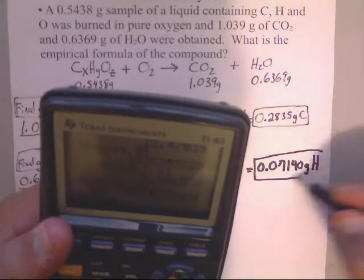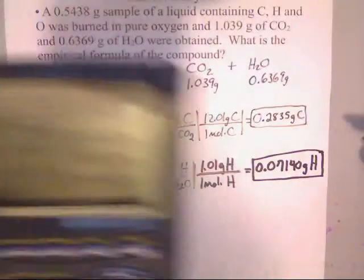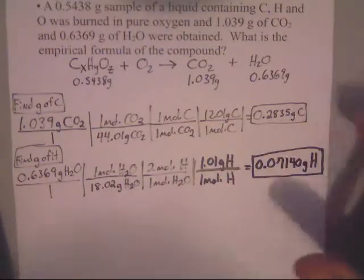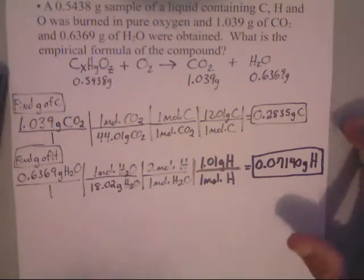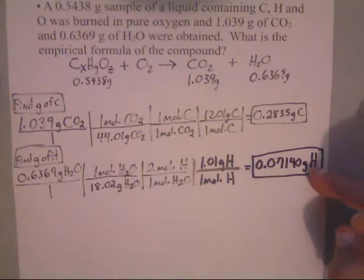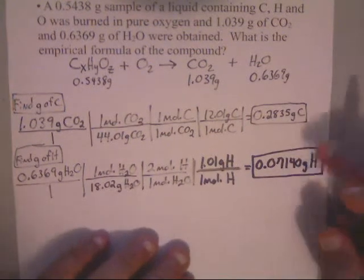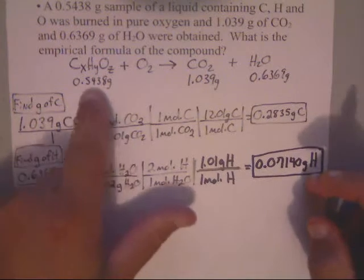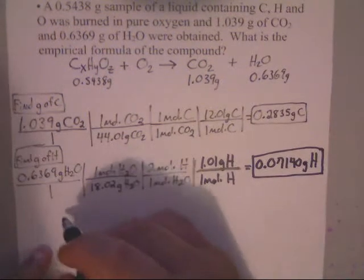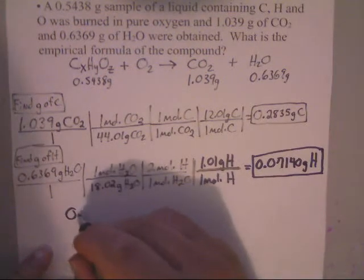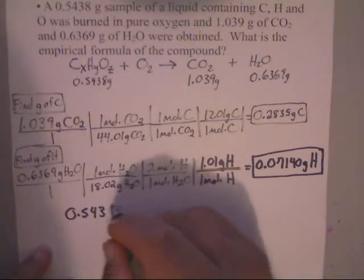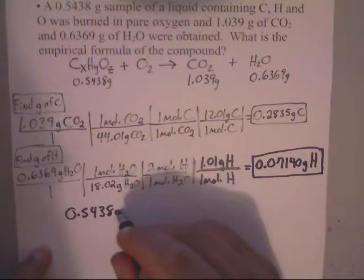I've got how many grams of hydrogen there are. I've got how many grams of carbon there are. So what I need to do now is I need to add these two together and subtract it from that. So basically, I want to take 0.5438, which is grams of that CxHyOz thing. And I'm going to subtract those two numbers.